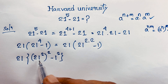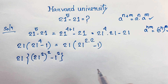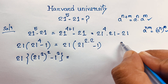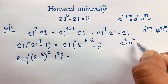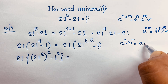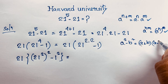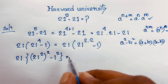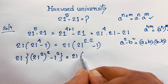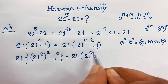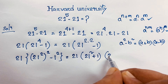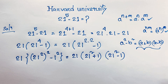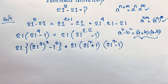You can see this expression matches the identity a squared minus b squared, which equals (a plus b) times (a minus b). Applying this math formula here, it becomes 21 times (21 squared plus 1) times (21 squared minus 1).